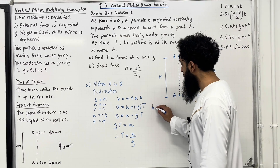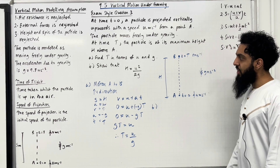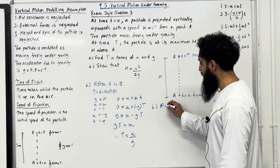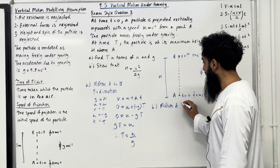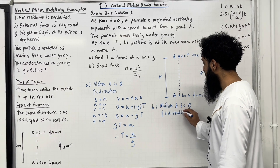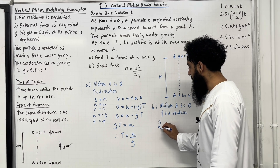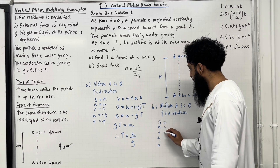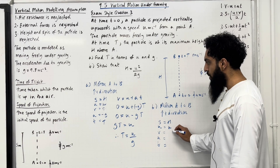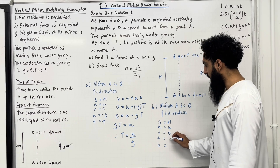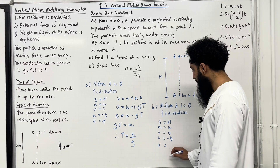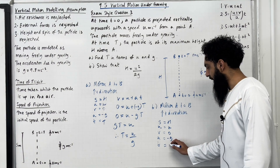Let's have a look at part B: show that H = u²/2g. Again, consider motion A to B, taking upwards to be the positive direction. Writing down SUVAT: S = H, U = u, V = 0, A = −g, and T = u/g (though we'll keep T as capital T for now).